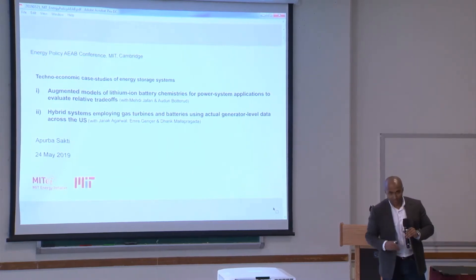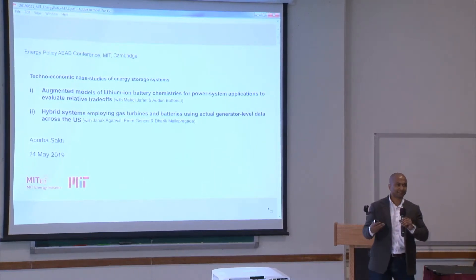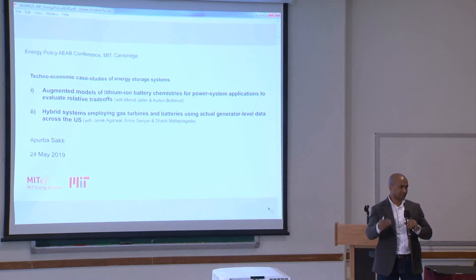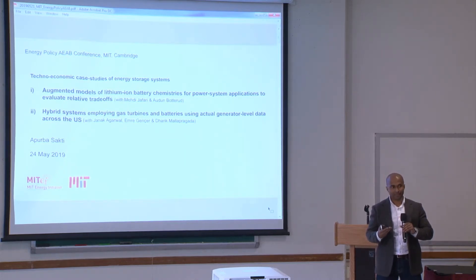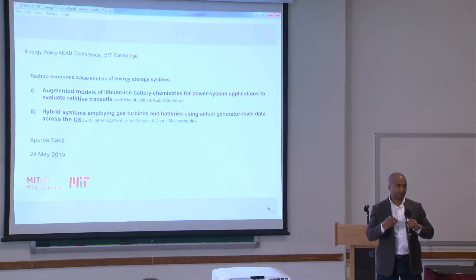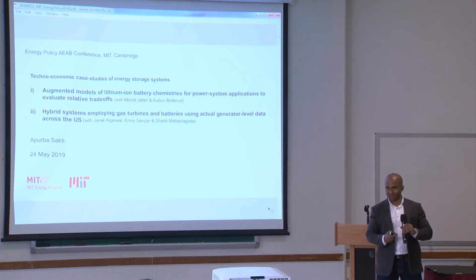For the first case study, let's say you are an investor and you want to invest in an energy storage system. Nowadays it's increasingly lithium-ion batteries in different flavors of chemistries. So let's say you invest in a one megawatt hour lithium-ion battery — what exactly does that mean? Do you actually end up getting one megawatt hour, or is the actual usable capacity significantly lower than the nameplate capacity? And how might that change the profitability of the system?